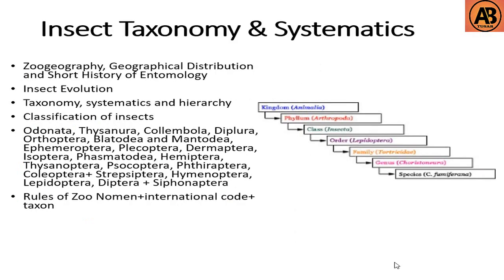Hello guys, welcome to another video. In this course we'll learn about insect taxonomy and systematics. The contents include geographical distribution and short history of entomology, then insect evolution, then taxonomy, systematics and hierarchy, and then we'll learn about the classification of insects.